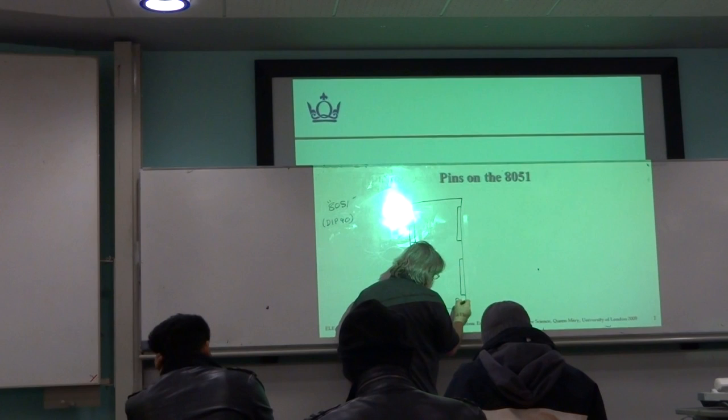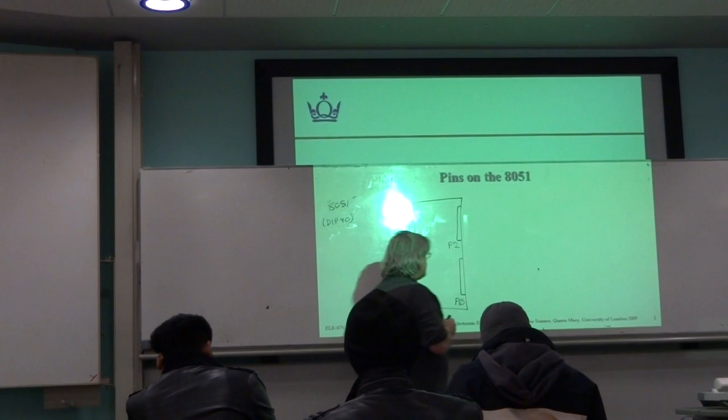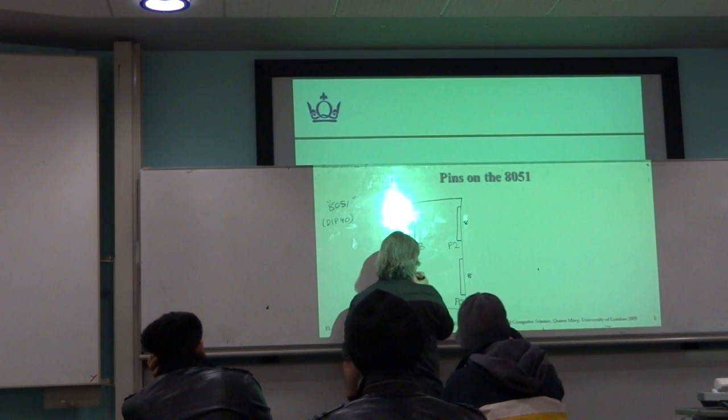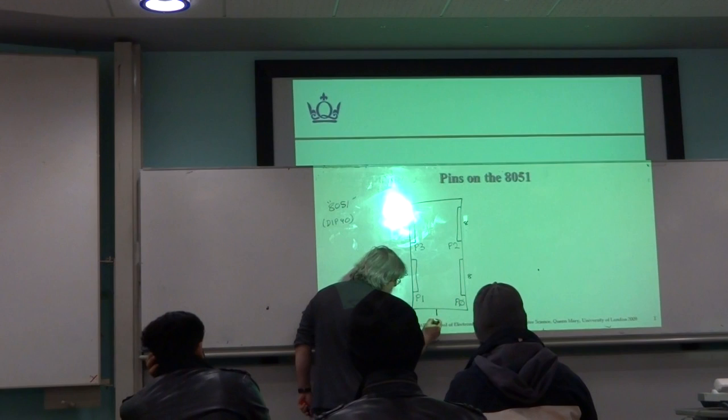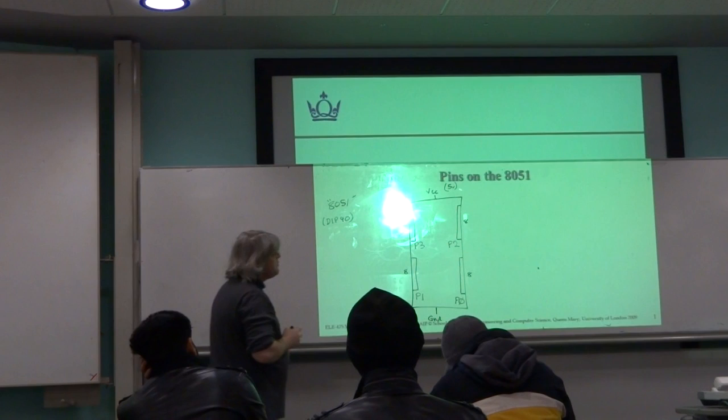Those four ports are labelled port 0, port 2, port 1, and port 3. Each of those ports is 8-bits. So of our 40 pins, that's 8 pins, another 8, another 8, another 8. We've also got ground and VCC, which in the classic 8051 is 5 volts.